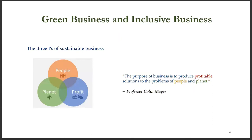Green and inclusive businesses go by many names, including sustainable businesses, social businesses, social enterprises, triple bottom line businesses, etc. According to Professor Colin Mayer from the University of Oxford, these businesses have a distinct purpose to produce profitable solutions to the problems of people and planet. Green or sustainable businesses are businesses that create profit by solving the problems of the planet. Inclusive or social businesses are businesses that create profit by solving the problems of people or society.